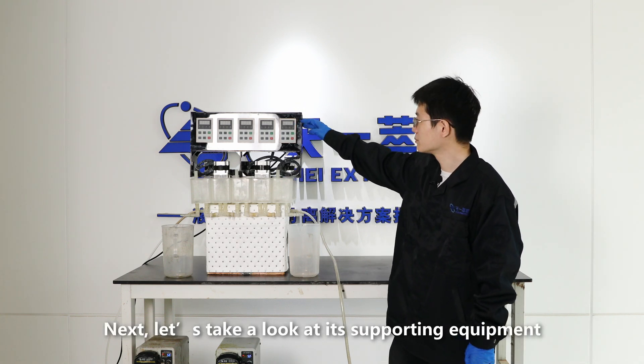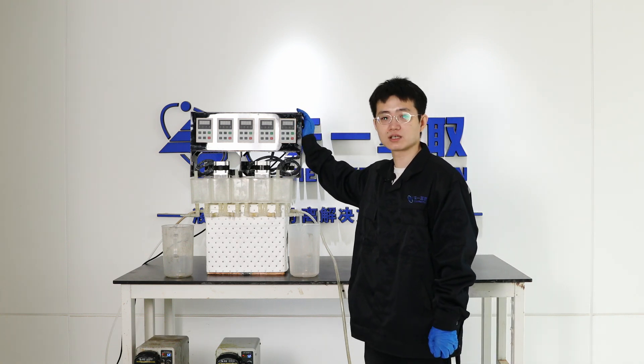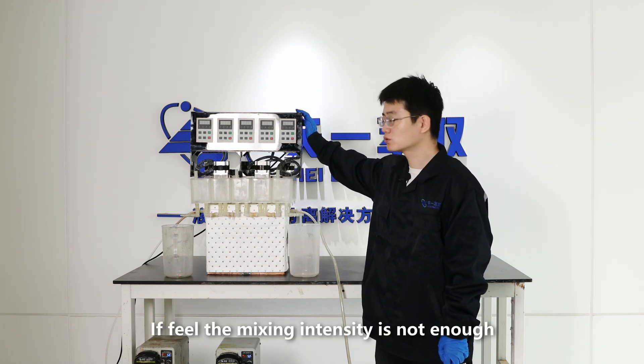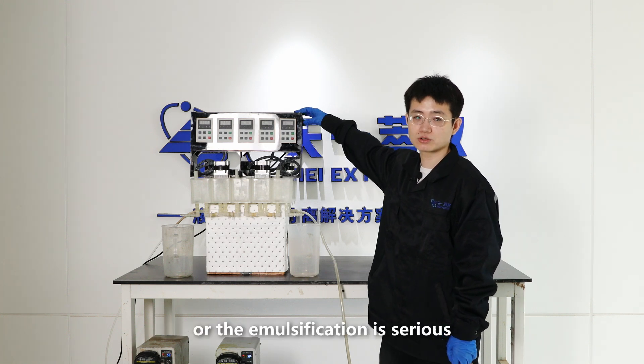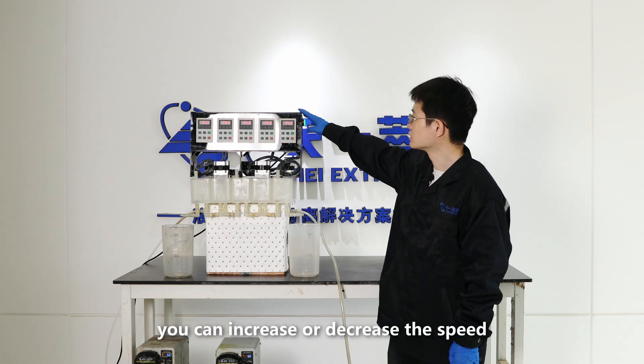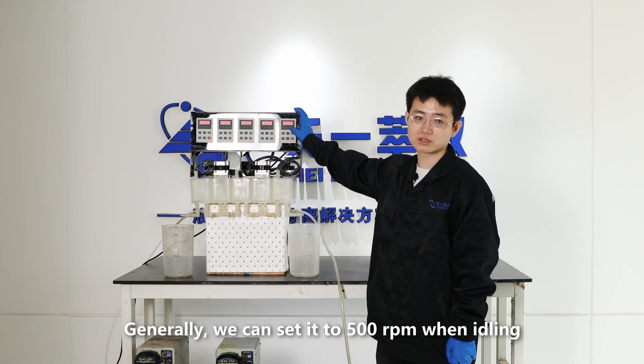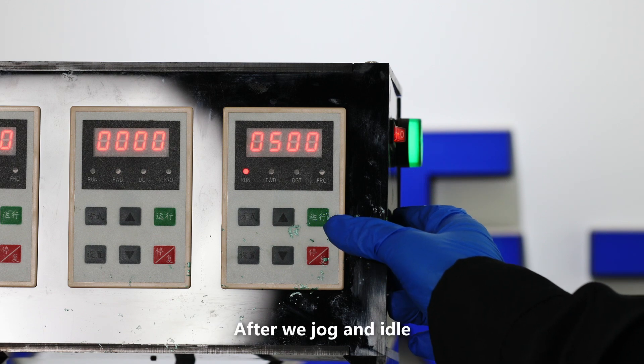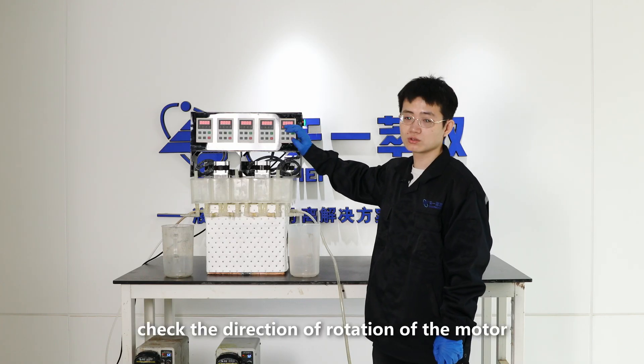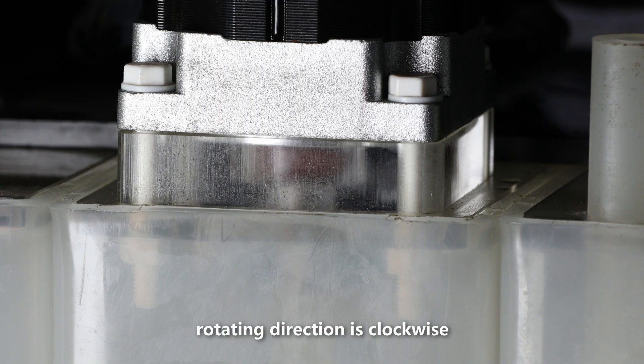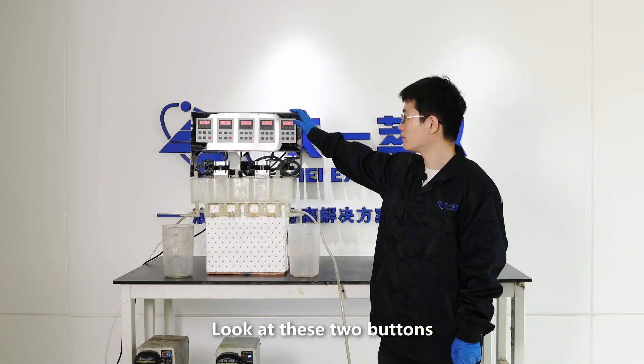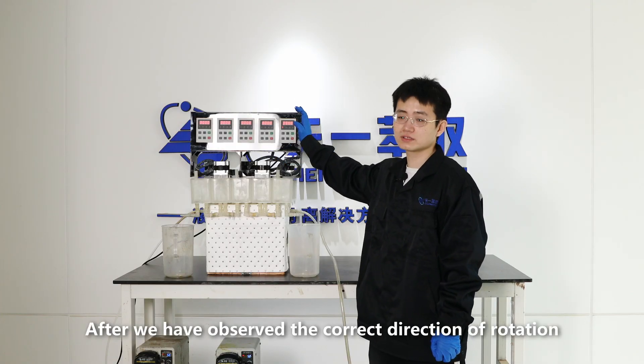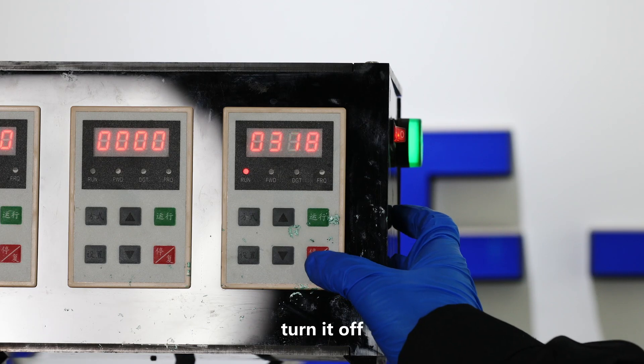Next, let's take a look at its supporting equipment. This is the speed regulator, which is used to control the speed of the mixing impeller. If field and mixing intensity is not enough, or the emulsification is serious, you can increase or decrease the speed. Generally, we can set it to 500 revolutions per minute when idling. The green one is the switch. After we jog and idle, check the direction of rotation of the motor. Rotating direction is clockwise. Look at these two buttons. They are used to adjust the speed. After we have observed the correct rotating direction, turn it off.